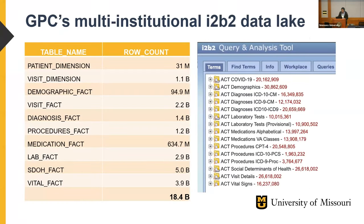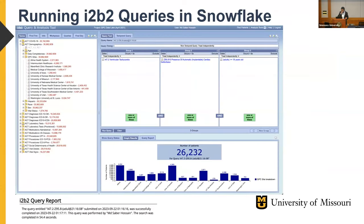In our GPC multi-institutional I2B2 data lake, we have 31 million patients and 18.4 billion records. To support multi-institutional clinical research, we introduced federated login in our I2B2 — thanks to the I2B2 developer team for making it easier to integrate. We also added a column in the patient dimension to represent the multi-institutional site and introduced a breakdown for GPC sites, which has been really helpful for clinical researchers. Running a query with three concepts takes 54 seconds to generate patient counts and site breakdowns from the GPC dataset.